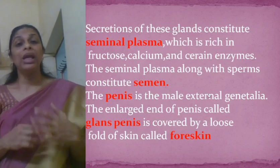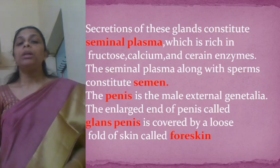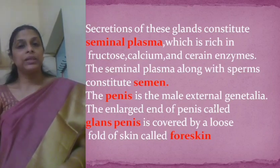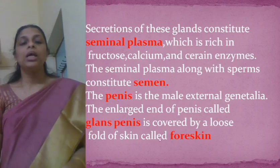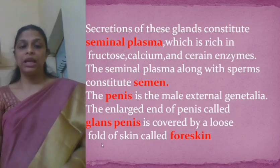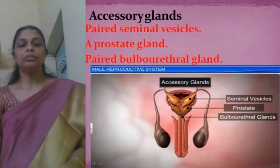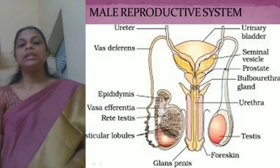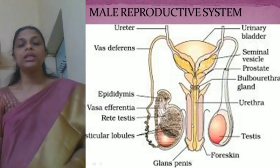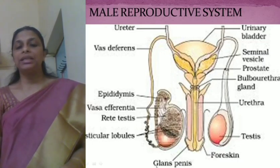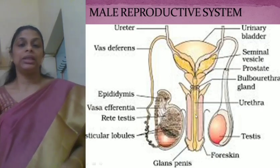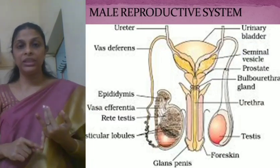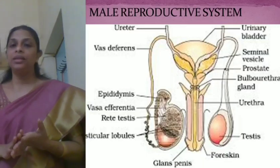The external genitalia of the male reproductive system consists of the penis. The enlarged end of the penis is called the glans penis and it is covered by a loose fold of skin called the foreskin. So the male reproductive system consists of a pair of testes, accessory ducts, accessory glands, and the male external genitalia.